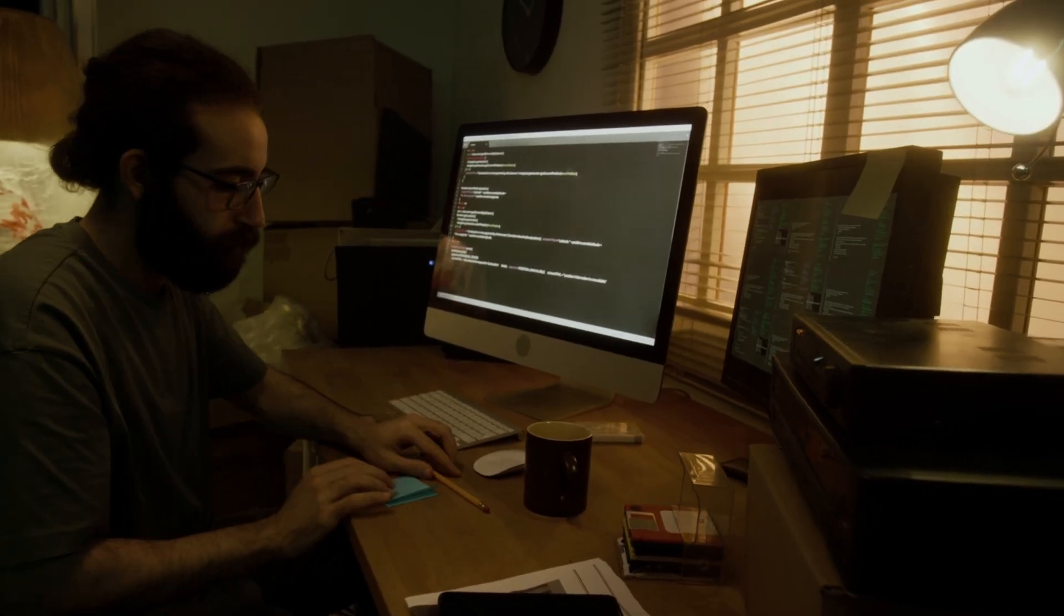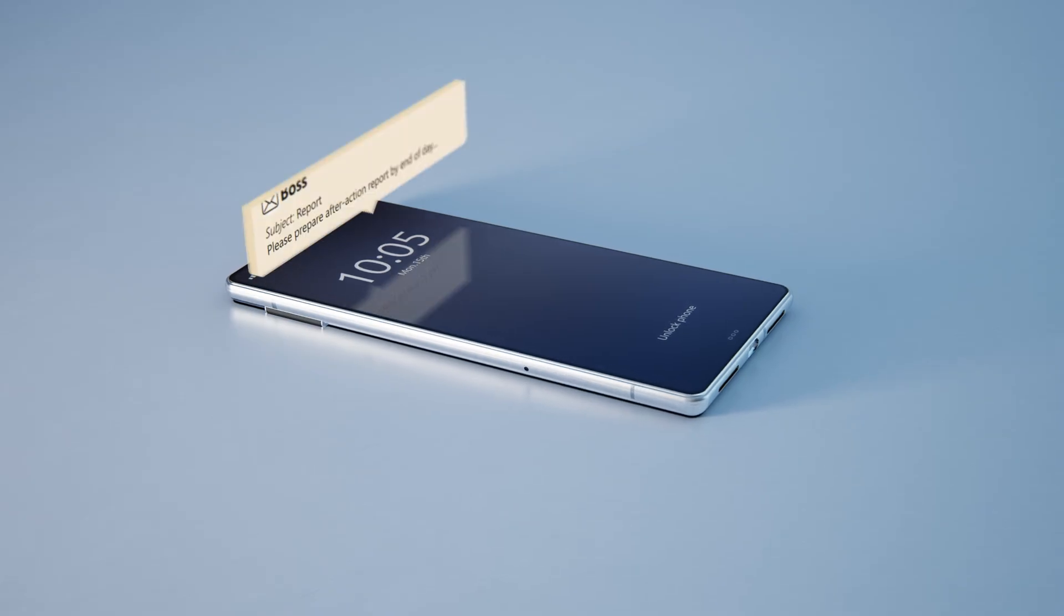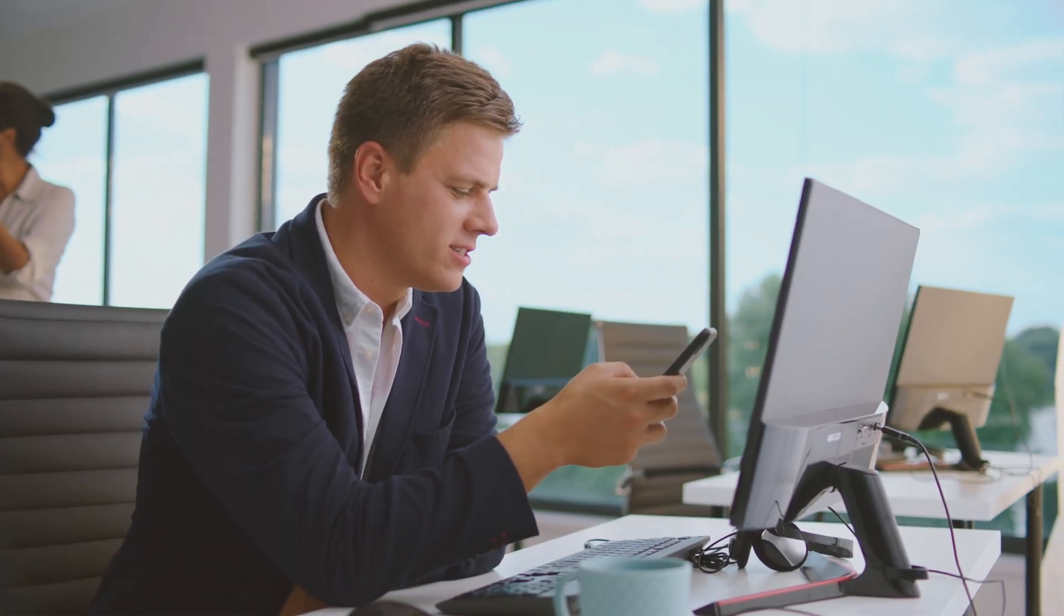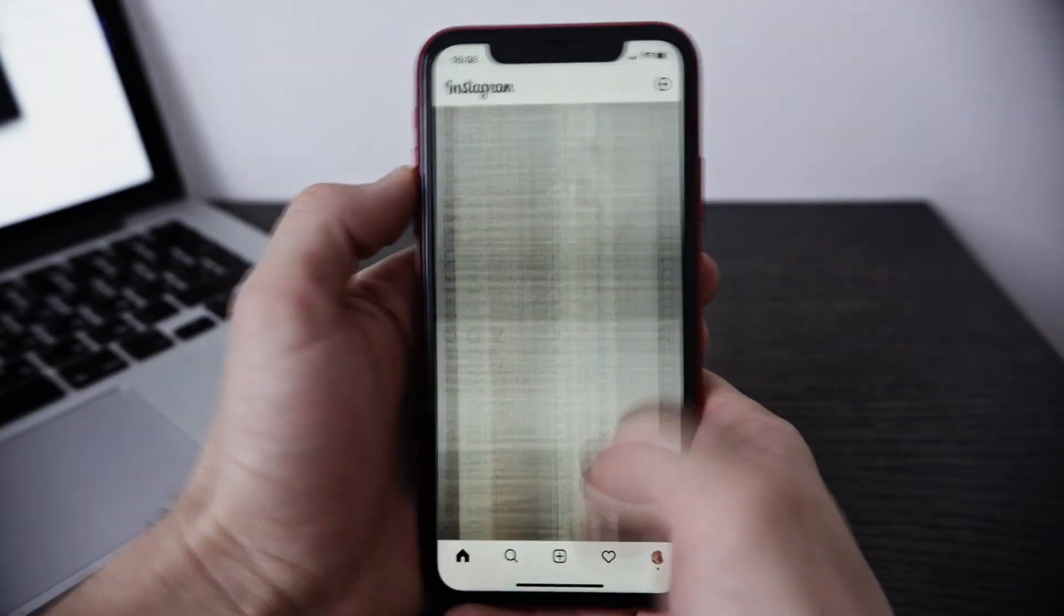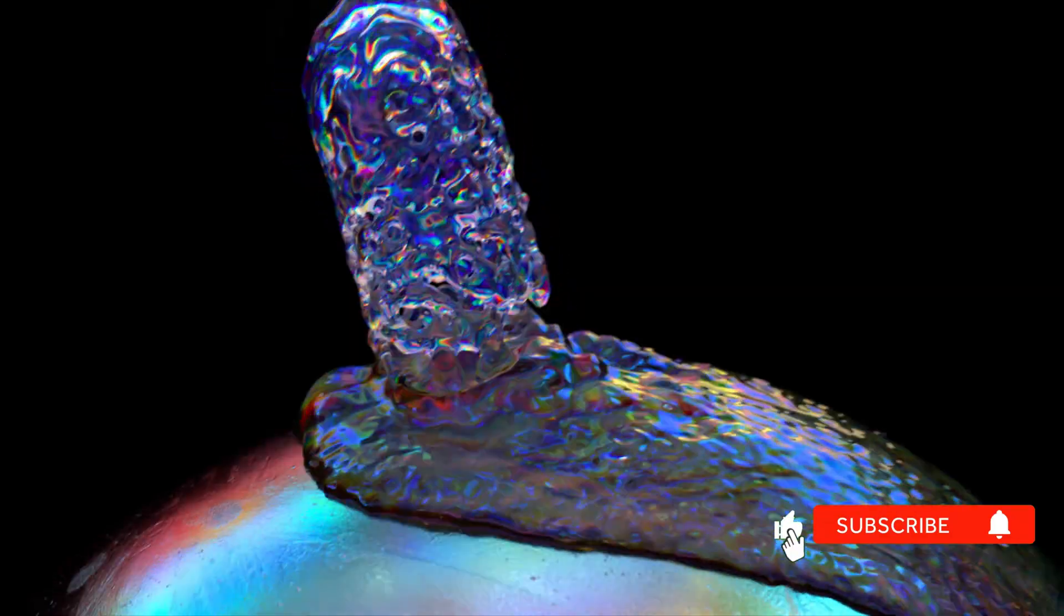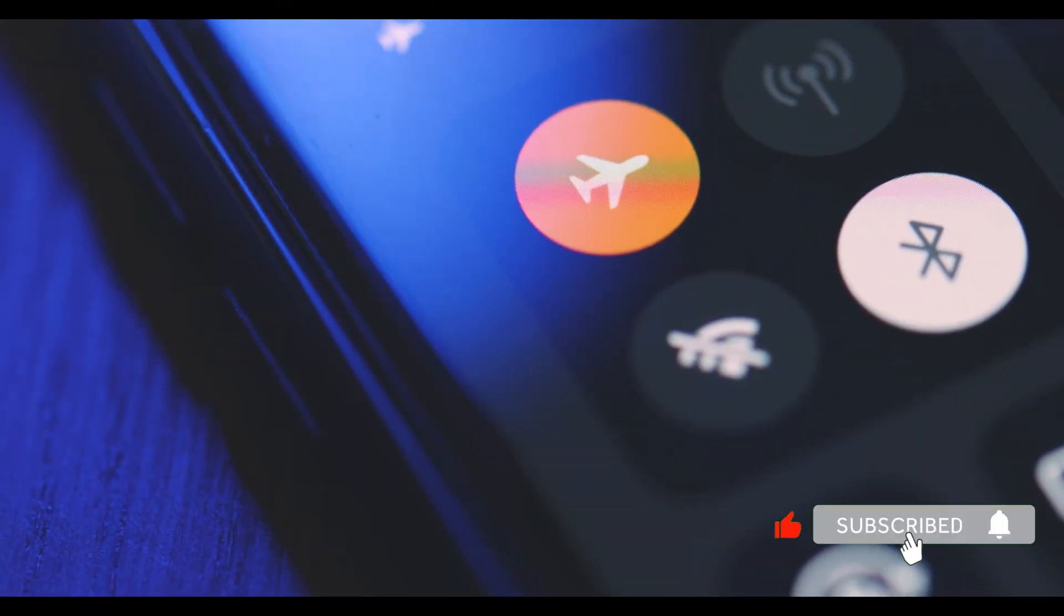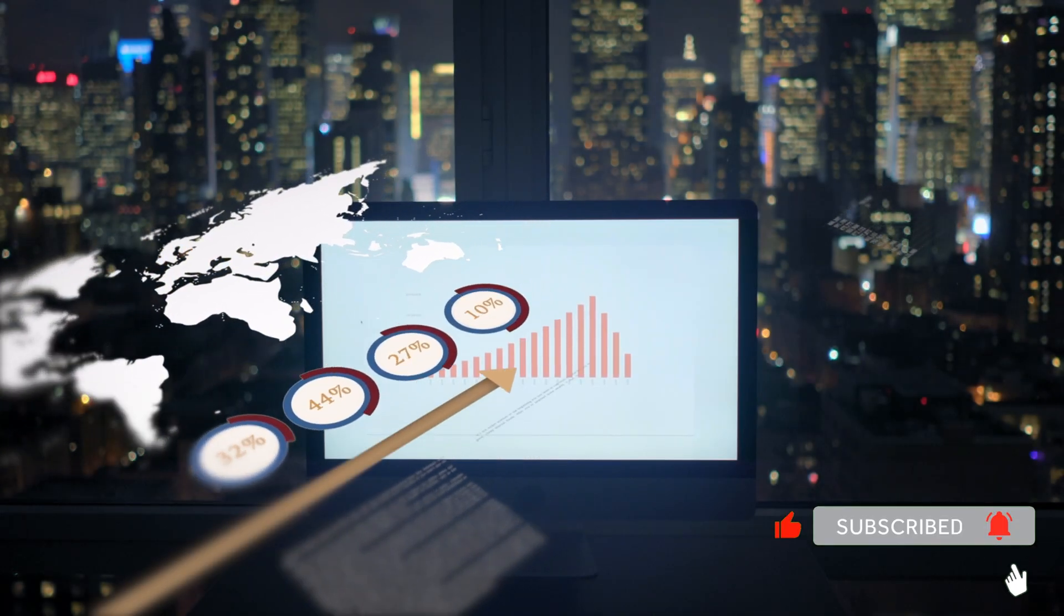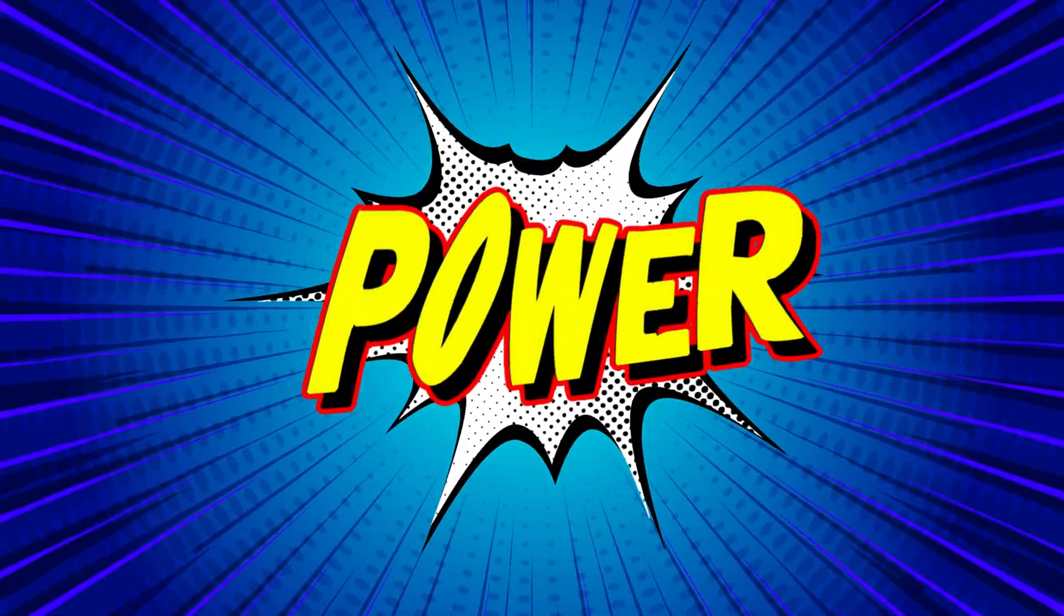Average knowledge worker switches tasks every three minutes. Highly intelligent people: 90-minute blocks of uninterrupted focus. Every notification is a bid for your attention. Every just-checking moment fragments your intelligence. Your phone isn't making you productive. It's making you stupid. If you feel guilty turning off notifications, you're fighting the entire digital economy designed to fracture your attention. That resistance? That's intelligence.